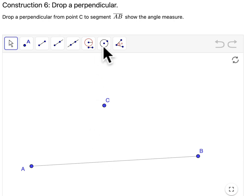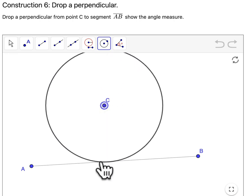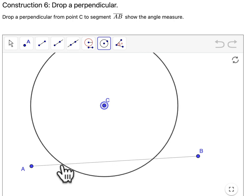What you want to do is first start with your compass tool, or in this case my circle tool, and create an arc that goes from C and crosses this segment down here. And I'm going to click, let's say, here.